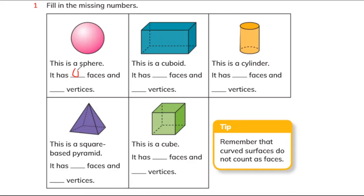The cuboid has six faces and eight vertices — eight corners. Now look at this cylinder: it has two faces, one on the top and one on the bottom. How many vertices can you see? Are there any corners like the cuboid has?